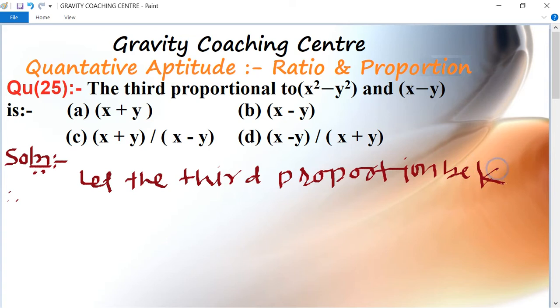According to the question, (x² - y²) : (x - y) = (x - y) : k.